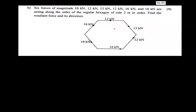6 forces of magnitude 10 kilo Newton, 15 kilo Newton, 12 kilo Newton, 16 kilo Newton and 10 kilo Newton are acting along the sides of a regular hexagon of side 2 meters in order. Find the resultant force and its direction.